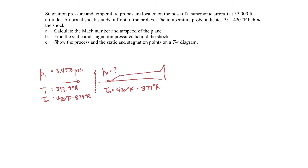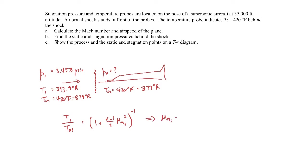The stagnation pressure, however, does change across a shock wave — it will decrease. But we'll come to that in a moment. Now that we know the stagnation temperature in front of the shock and the static temperature in front of the shock, the flow upstream is isentropic, so we can use the isentropic relations T01/T1 as a function of Mach number 1 to figure out the Mach number there. That comes out to be M1 = 2.48.